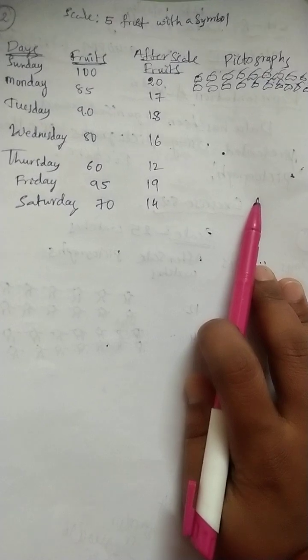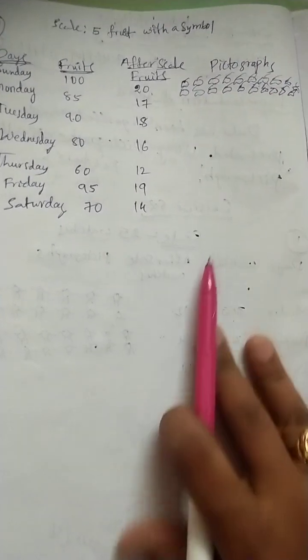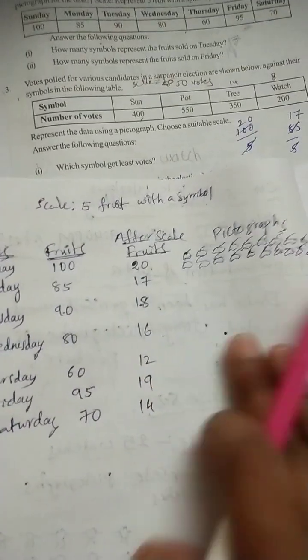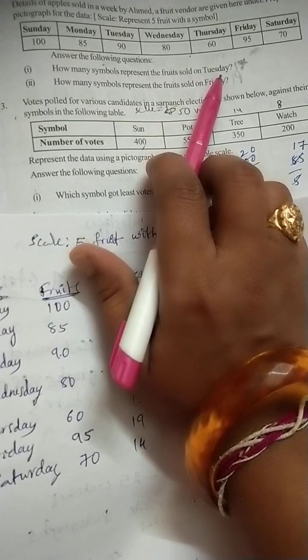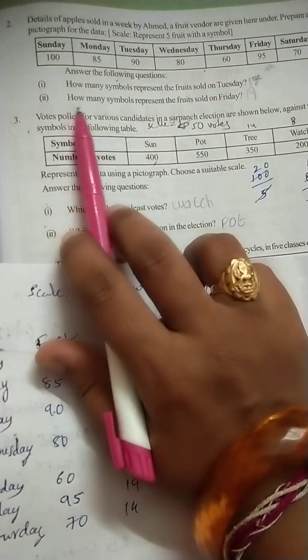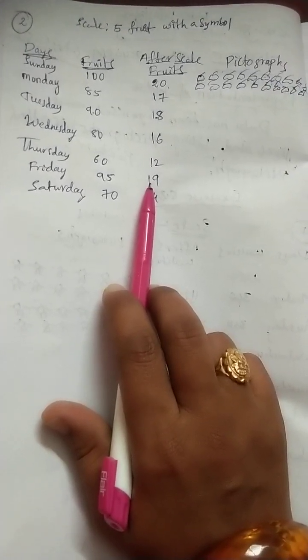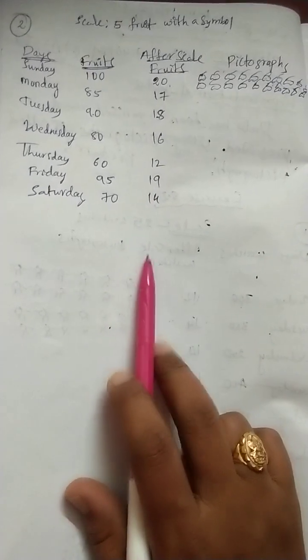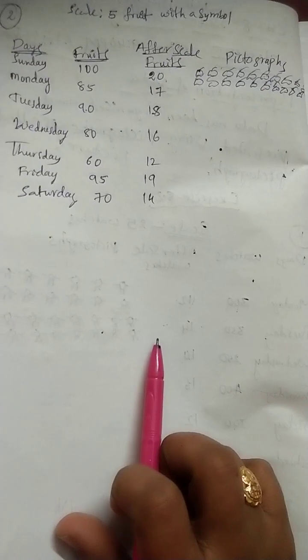After drawing all the pictographs with the apple symbol, answer the sub-questions. How many symbols represent the fruit sold on Tuesday? — 18 symbols. How many symbols represent the fruit sold on Friday? — 19 symbols. I hope you understand. Thank you — for more videos, subscribe to my channel and support me. Have a nice day, bye!